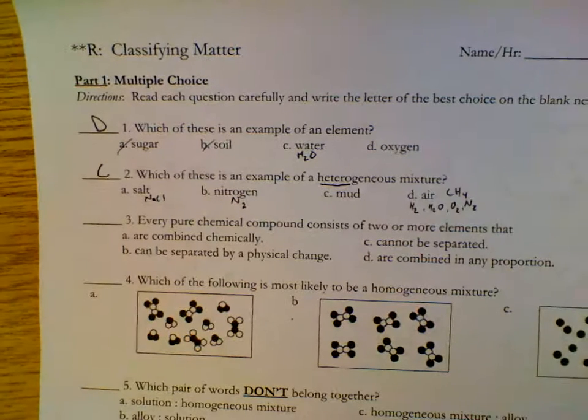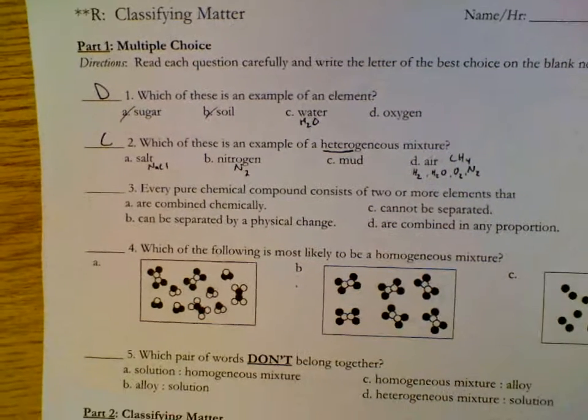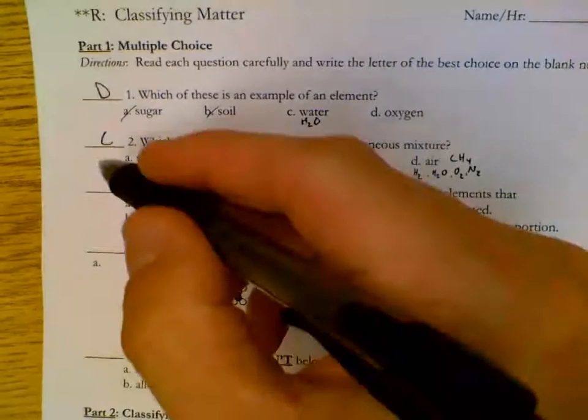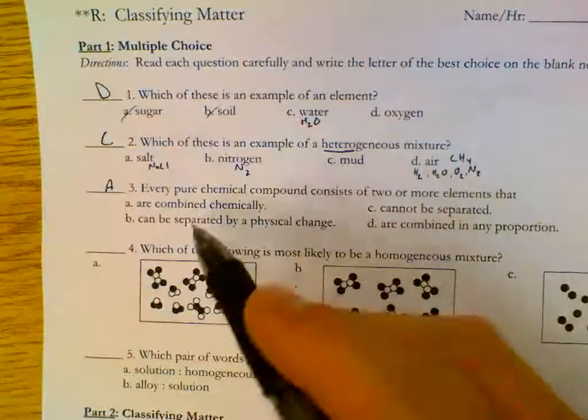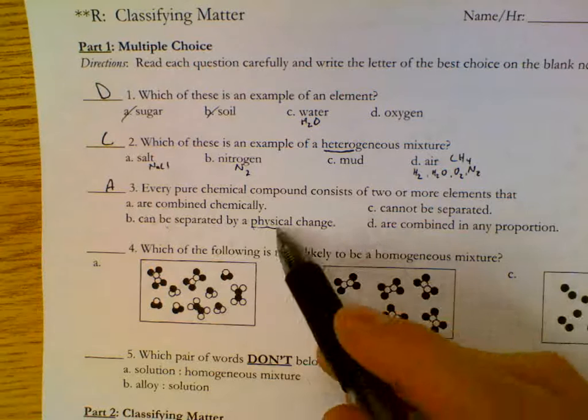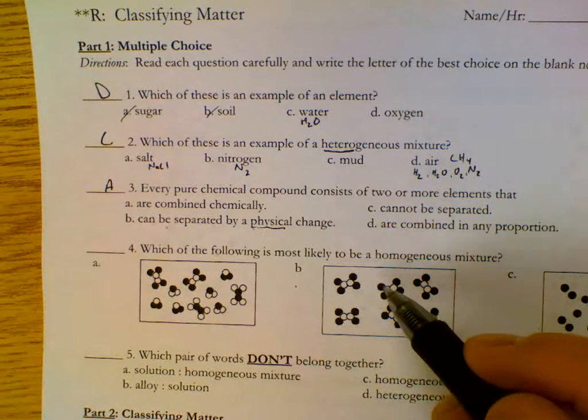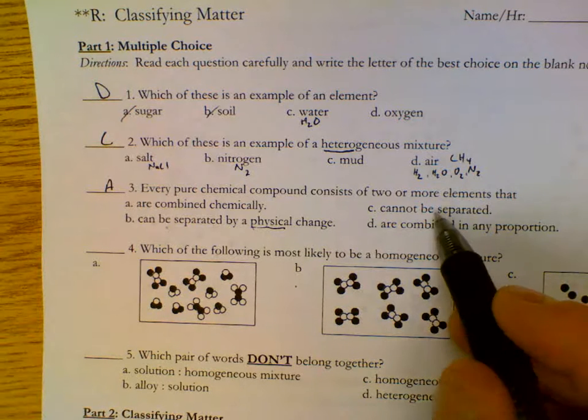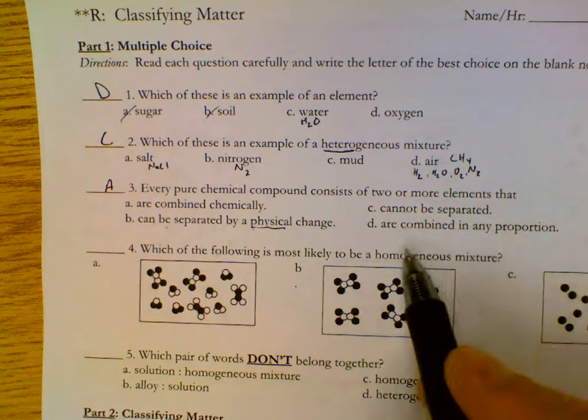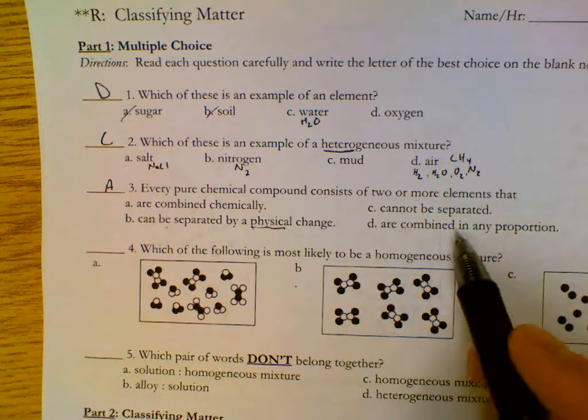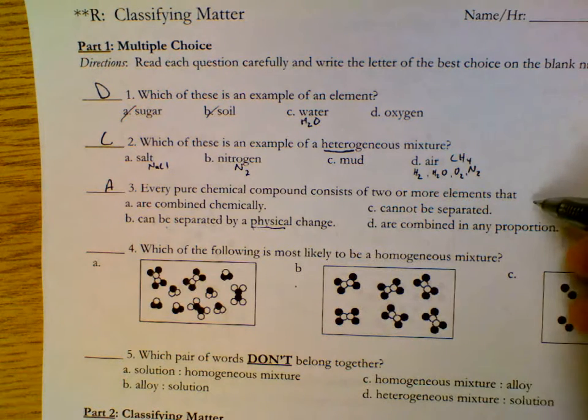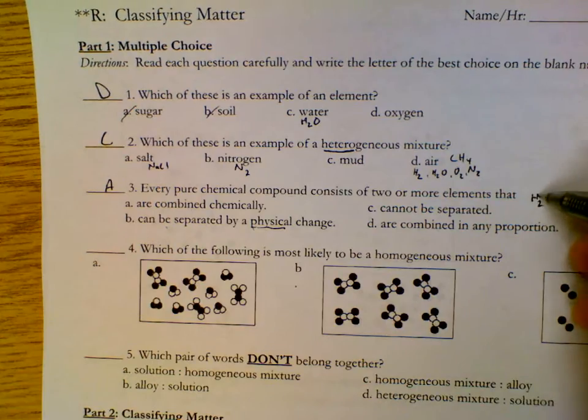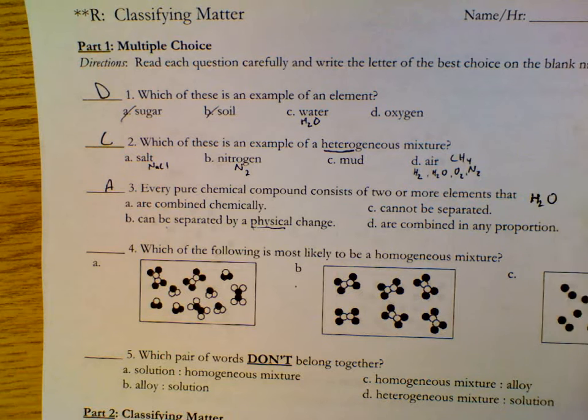Every pure chemical compound consists of two or more elements that are chemically combined is correct. They cannot be separated by physical changes. They need to be separated by chemical changes. They can be chemically combined in any proportion. That's incorrect. Compounds always have a definite proportion. For example, H2O is always two copies of hydrogen, one copy of oxygen. That's the only way we can have water.